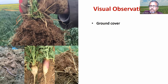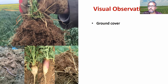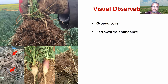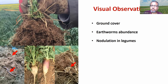We also did some visual observations using NRCS in-field assessment protocols, and we see a lot of visual indices. For example, improved ground cover is obvious because fallow has no ground cover. We also see increased numbers of earthworms with cover crop treatments. With some legume cover crops, I would not say there was a lot of nitrogen fixation — I did not inoculate the legume — but we could still see some nodules and nitrogen fixation happening in the soil.